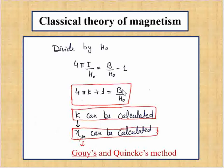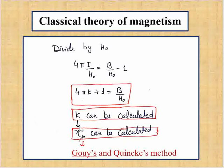If we have the induced magnetic field B and the applied magnetic field H₀, we can easily calculate kappa. From kappa we can calculate molar susceptibility, since we know the density and molar mass. Experimentally, we measure susceptibility using two methods: the Gouy method and the Quincke method.